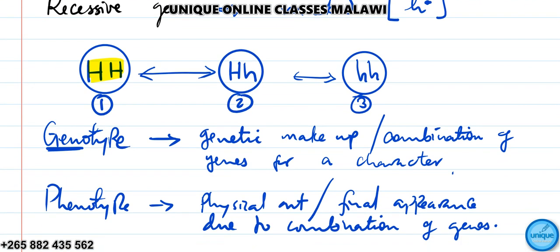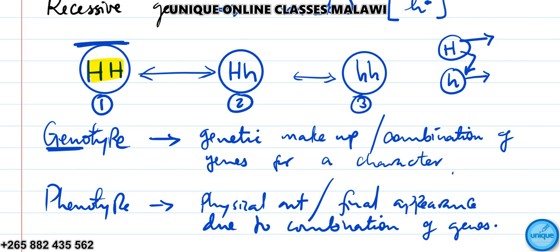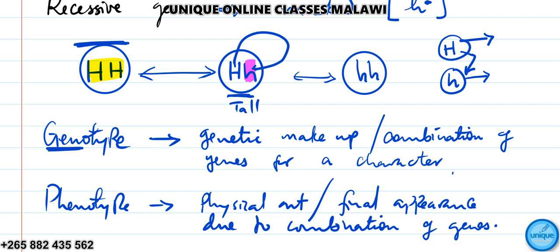For instance, capital H represents tallness and small h represents shortness. This gene H is dominant over small h. So both HH and Hh will show tallness as the phenotype, because the dominant gene masks the recessive one. Whereas hh — a combination of only recessive genes — will show shortness.